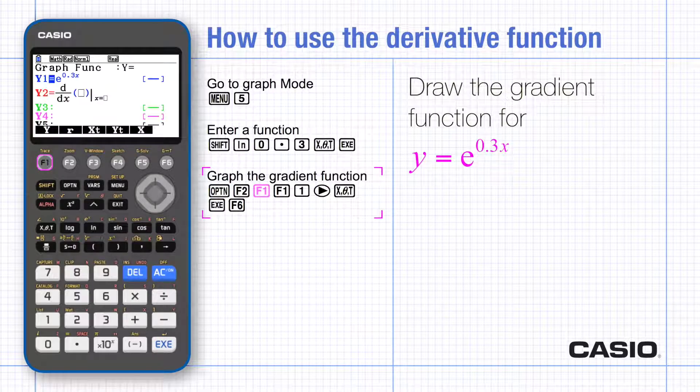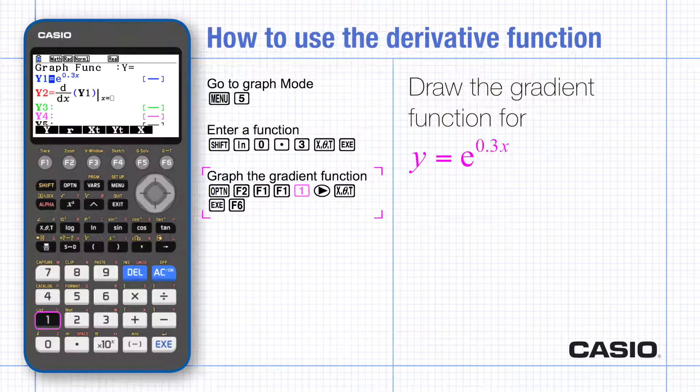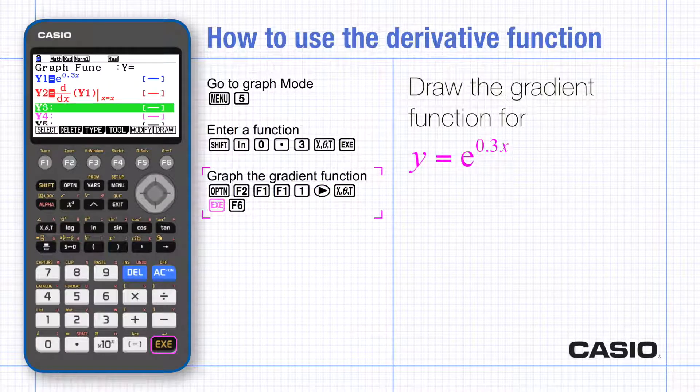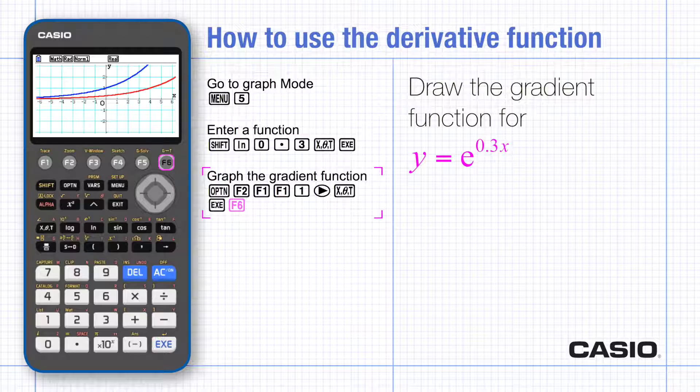Scroll right and type x equals x using the x theta t key. This allows the gradient function to be drawn for all values of x. Execute and draw.